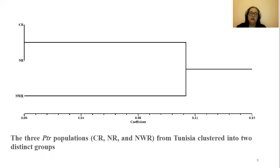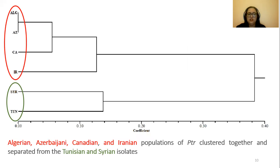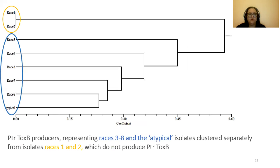The clustering of the PTR isolates originating from three geographical origins in Tunisia revealed clustering into two distinct groups, where the northwestern region and northern region isolates clustered separately from the coastal region. Algerian, Azerbaijani, Canadian, and Iranian populations of PTR clustered together, separately from Tunisian and Syrian isolates. The PTR ToxB producers representing races 3, 5, 6, 7, and 8, as well as the atypical isolates identified in this study, clustered separately from races 1 and 2, which do not produce PTR ToxB.